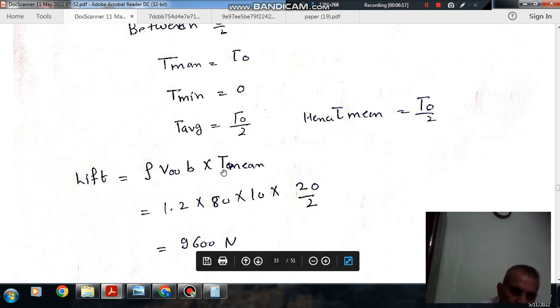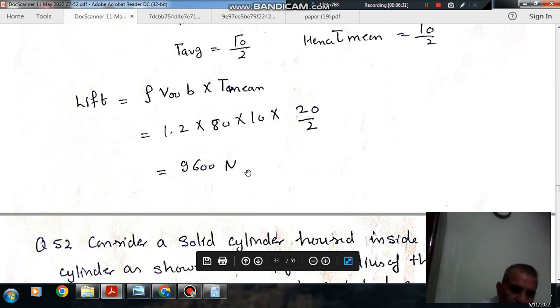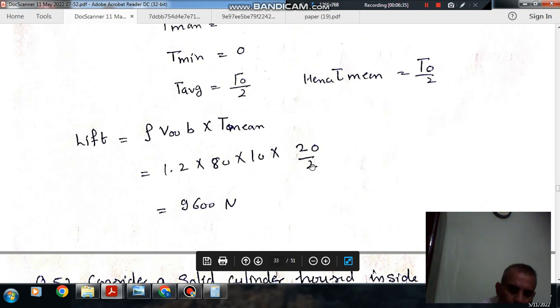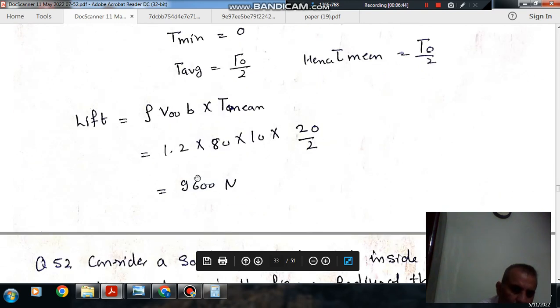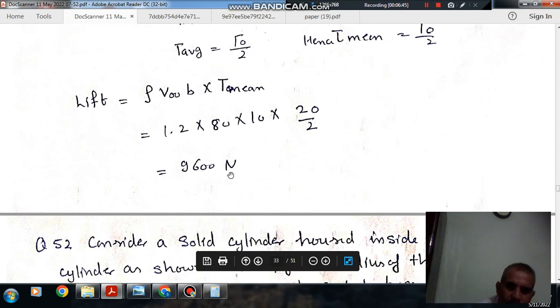The lift generated is ρVBΓ_mean. Γ_mean is Γ₀/2 which is 20/2 equals 10. B is 10, V is 80, ρ is 1.2, so the lift equals 1.2 times 80 times 10 times 10, which equals 9600 Newtons.